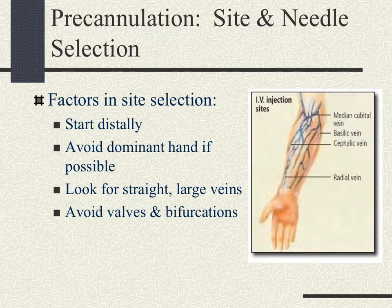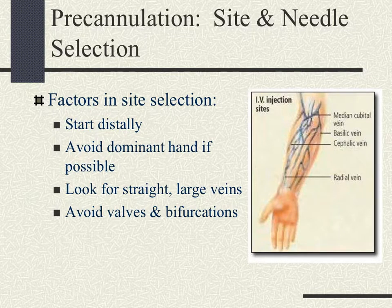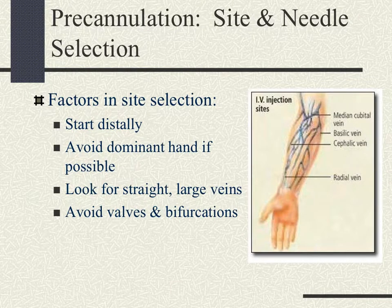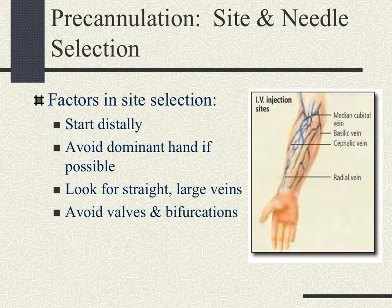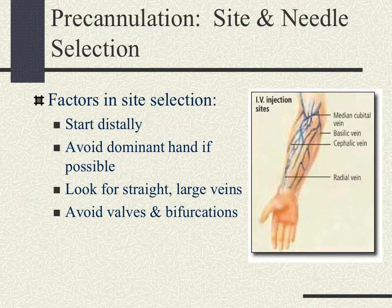Any patient who has even the slightest chance of being a surgical patient should have a large-bore IV of 18 gauge or bigger — the smaller the number, the larger the gauge. The anesthesiologist will generally put in a second larger line if you don't at the time of surgery. Anyone receiving anticoagulant or clot-busting therapy like TPA should have three lines, including one 18 or 16 gauge for blood draws before the medication is given.